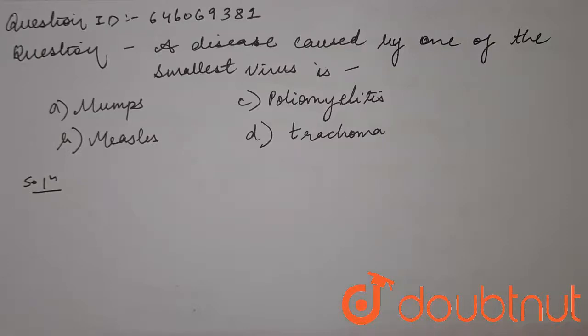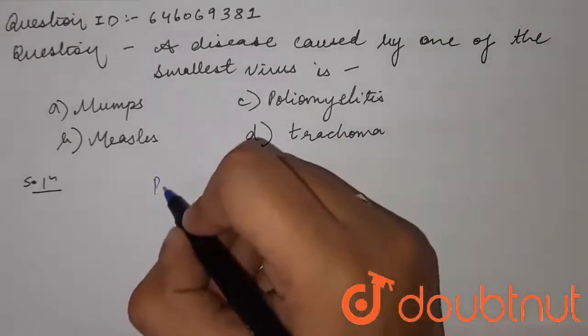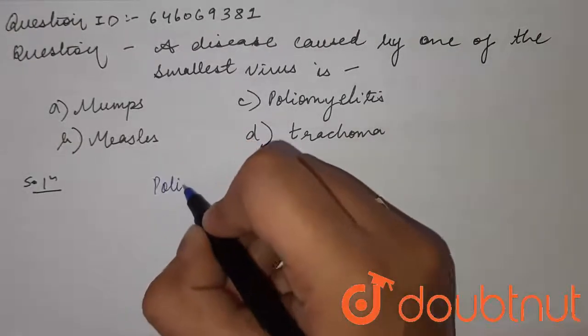Hello students. We have a question: a disease caused by one of the smallest known viruses is — (a) mumps, (b) SARS, (c) poliomyelitis, or (d) trachoma. So students, poliomyelitis...